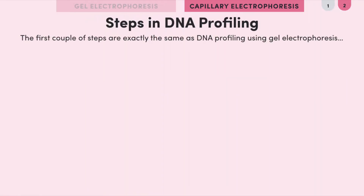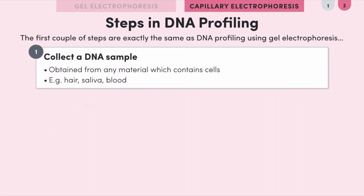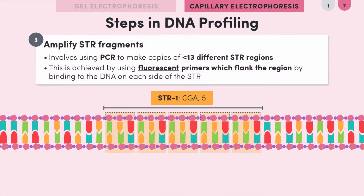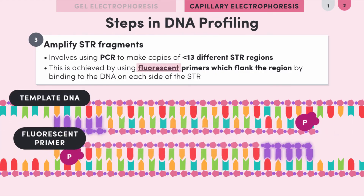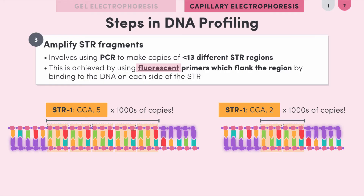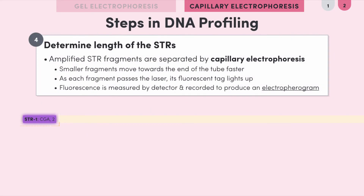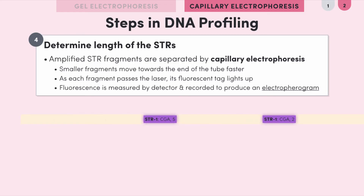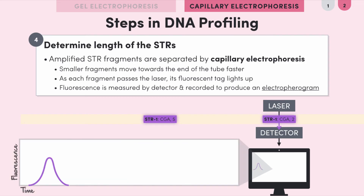The first few steps are the same: we collect a sample and extract the DNA. Again we use PCR to amplify the STRs. The big difference is that this time we use fluorescent primers — since the primers are incorporated into the STR copies, every STR copy will have fluorescent tags. To separate the fragments, we use capillary electrophoresis: shorter fragments move quickly through the pores of the gel while long fragments move more slowly. As each fragment crosses the finish line at the end of the tube, it's illuminated by a laser, allowing the attached fluorescent dye to be detected.